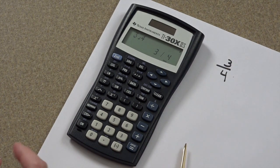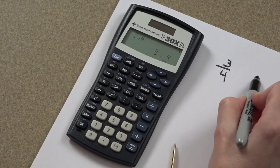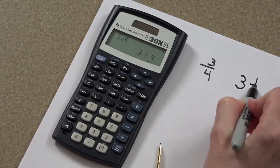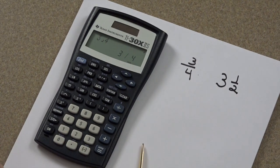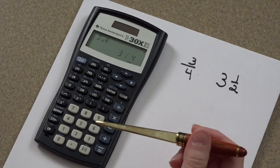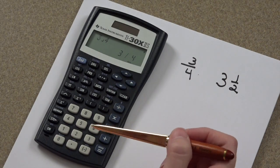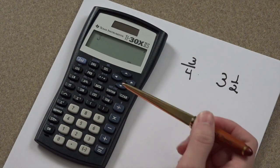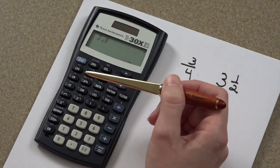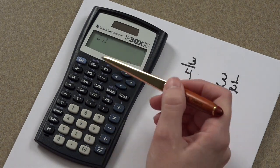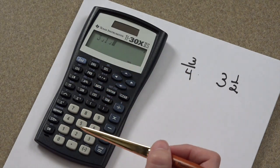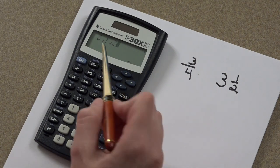Now, what happens if you want to enter in a mixed numeral, 3 and a half? Well, you do the same thing, only you'll just have an extra two buttons to push. Here's your 3, your fraction key, your 1, your fraction key, and then your 2, fraction key.